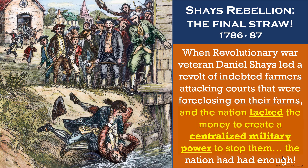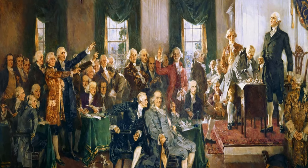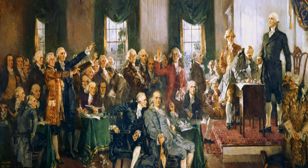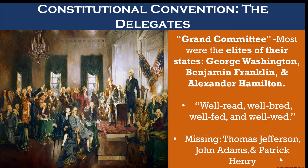Unfortunately, the central government, lacking money to support a military force, was powerless to stop them. For many, this was the final straw and a rallying cry to create a more powerful national government. The delegates met in the summer of 1787 in Philadelphia to address these problems and to revise the Articles of Confederation. This gathering included what your test may refer to as the Grand Committee.